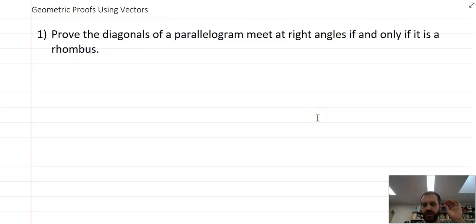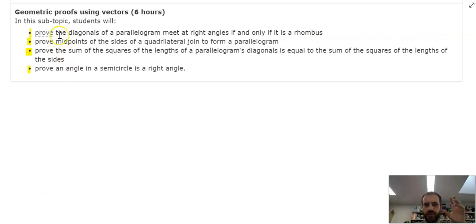We're doing some geometric proofs using vectors here. This is part of the Queensland Senior Syllabus for Math Specialist. Here are the geometric proofs you're expected to know. There are four different proofs. You can pause it and read through those if you want. We're going to go through each of those proofs in turn.